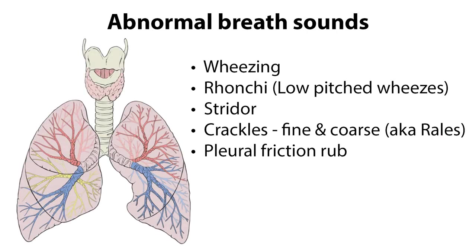Types of abnormal breath sounds include wheezing; ronchi, which sound like low-pitched wheezing; stridor; crackles, also known as rales, which may be further classified as fine or coarse; and pleural friction rub.